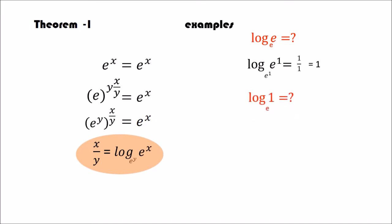Next log 1. 1 means e power 0. So 0 by 1 is 0.